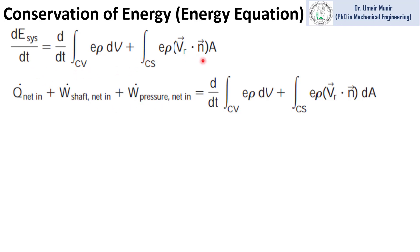On the right side of the equation we have two integrals. The first is a volume integral representing the change in energy inside the control volume with respect to time. The second term is a surface integral representing the flow of energy from an inlet or outlet due to mass flow, where E times the remaining term gives the mass flow rate.